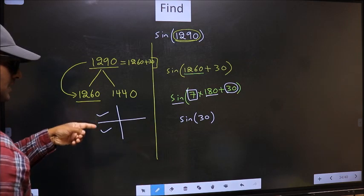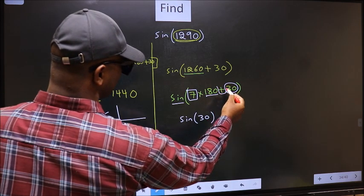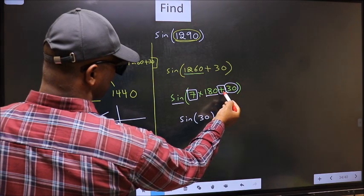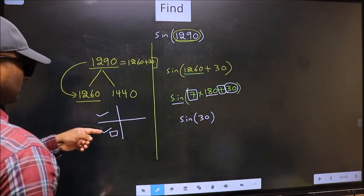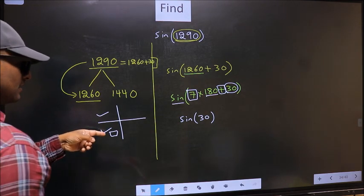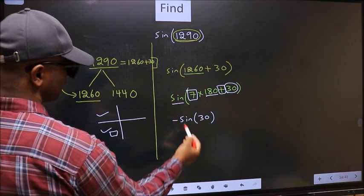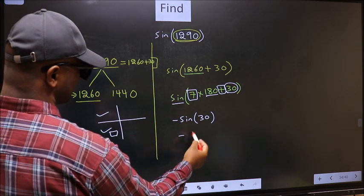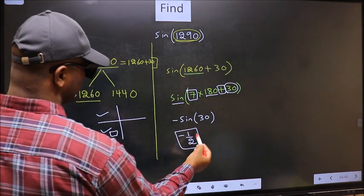So now to select the quadrant, we should look at this symbol. Here we have plus. That means angle lies in the third quadrant. And in the third quadrant, sin is negative. So we should put negative. So negative sin 30 is negative 1 by 2. This is our answer.